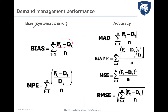For measuring accuracy, I can calculate the mean absolute deviation, which is the forecast error in absolute value. For each period I measure the absolute difference between forecast and demand, then average the sum. I can also compute the mean absolute percentage error by dividing the absolute difference between forecast and demand by the demand, then averaging.